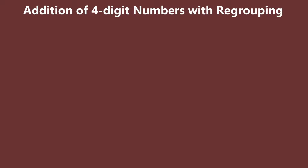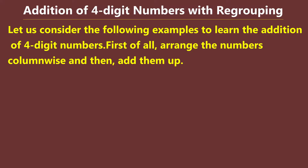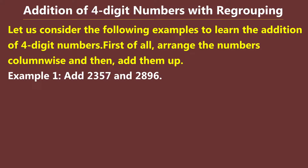Addition of four-digit numbers with regrouping. Let's consider the following example to learn the addition of four-digit numbers. First of all, arrange the numbers column-wise and then add them up. Example 1: Add two thousand three hundred and fifty-seven and two thousand eight hundred and ninety-six.